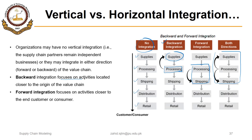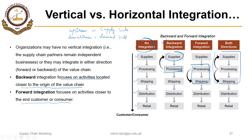Backward integration focuses on activities located closer to the origin of the value chain — that is the supply side or upstream. Downstream of the supply chain is also called the demand side. I hope these two terms — vertical and horizontal integration — are now clear. In the next segment, we will have an overview of this lecture with the help of some progress check questions.